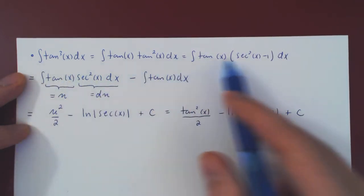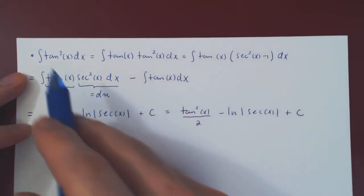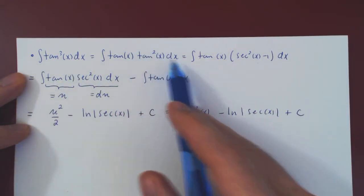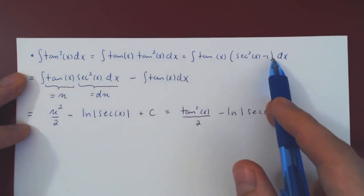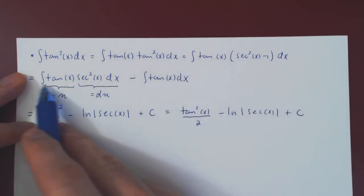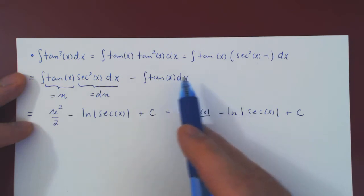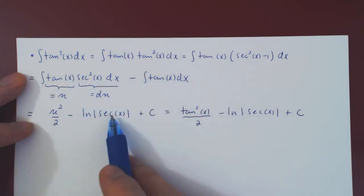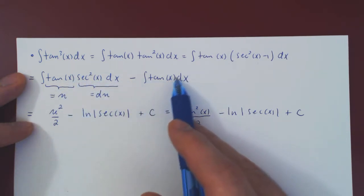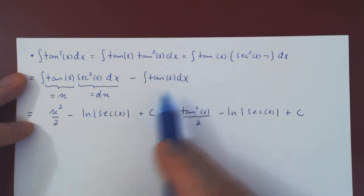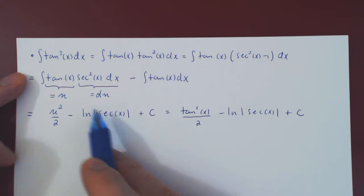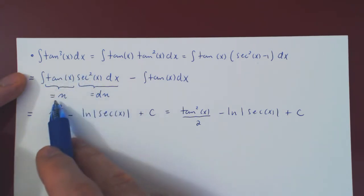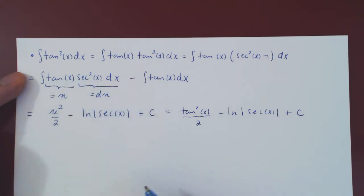So a fairly easy integral. We factor the tan squared, replace by secant squared minus 1, expand out, giving two integrals that are both rather easy to solve — one solved previously, and one doable with a simple u-substitution.